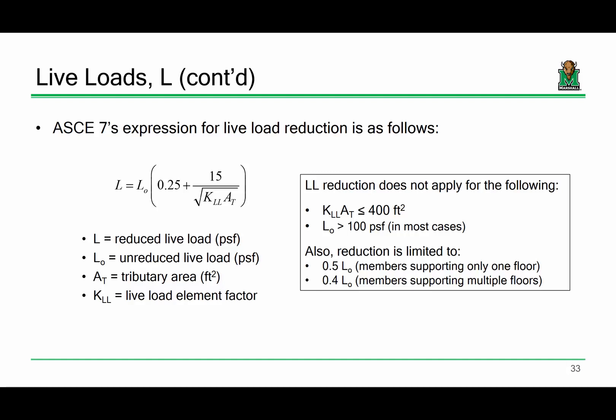Since the full specified live load across an entire floor area simultaneously is unlikely, we can reduce those loads to account for that probability — hence live load reduction. This is ASCE 7's expression for live load reduction, one of the most fundamental equations in structural engineering.